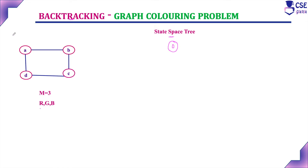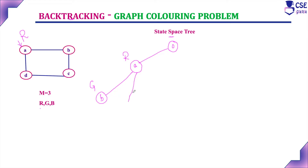We will now construct the state space tree for this graph coloring problem. First, assign red color to vertex A. Since A is red, vertices B and D cannot be colored red. Moving to vertex B, assign green color. Assigning red to B is a dead end since A and B are adjacent and A is already red. With A=red and B=green, we proceed depth-wise.